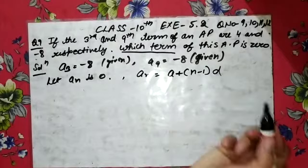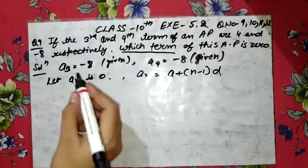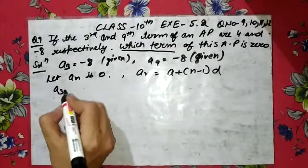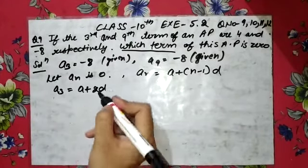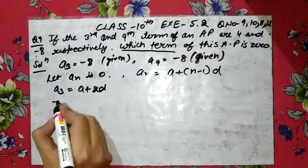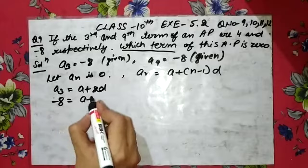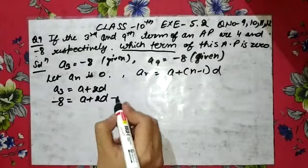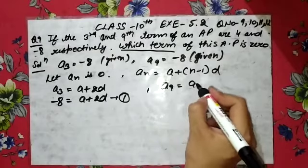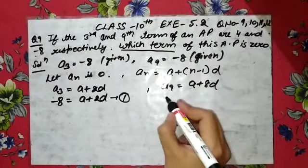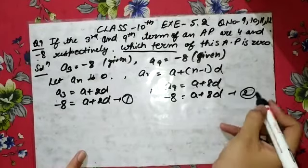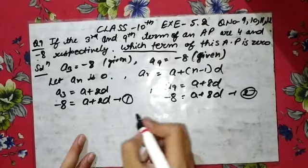To find n, we use the formula: an = a + (n−1)d. So for a3: a + 2d = 4, that is the first equation. And for a9: a + 8d = minus 8, that is the second equation.